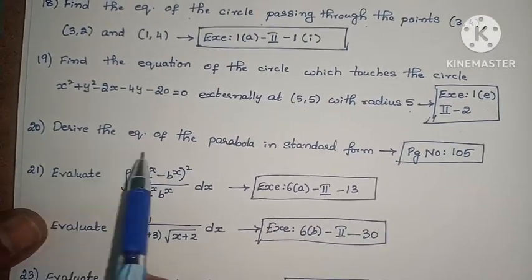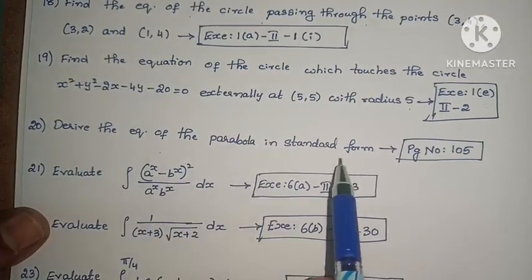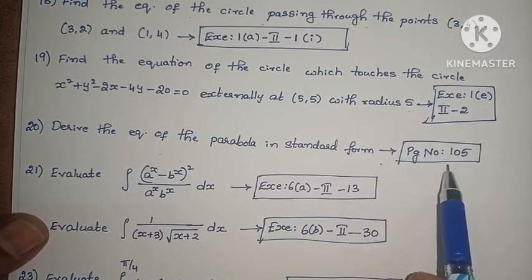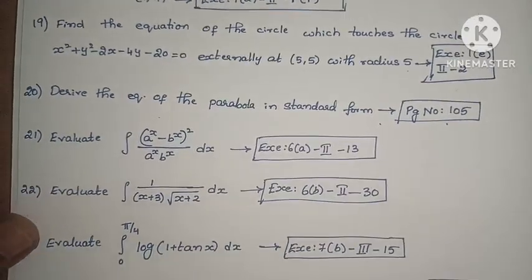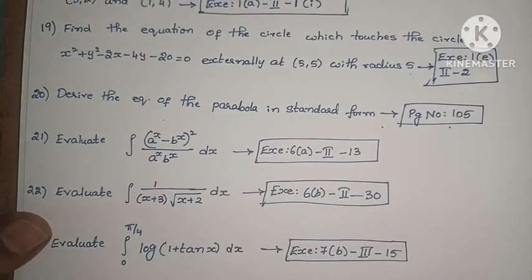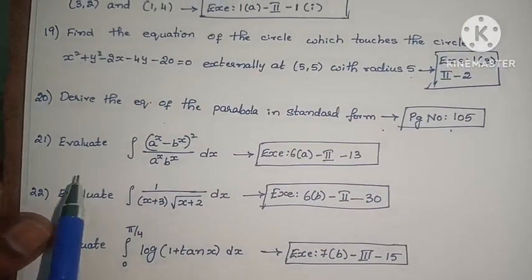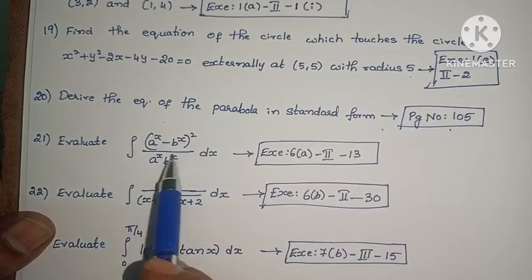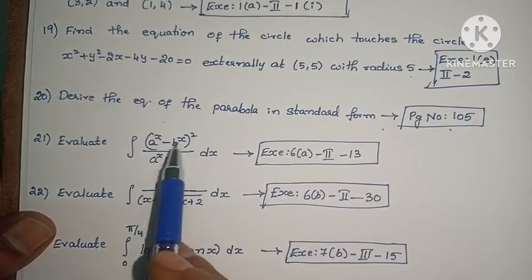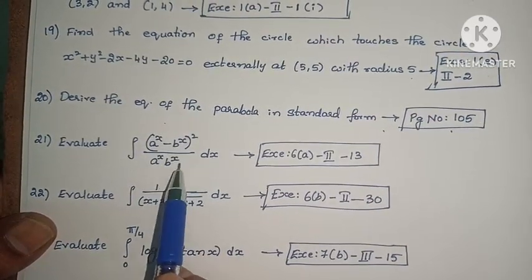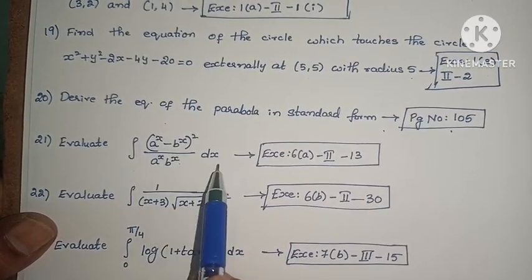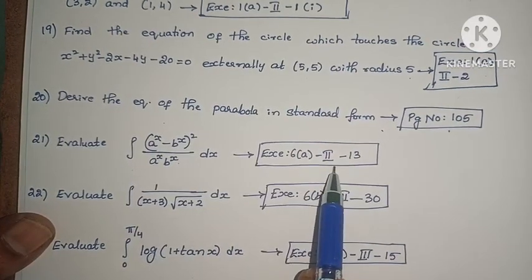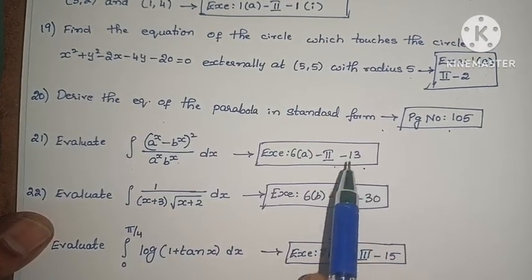Next: derive the equation of the parabola in the standard form. This is on page number 105 — the parabola derivation. Next: evaluate ∫ (aˣ - bˣ)² / (aˣ · bˣ) dx. This is question 6, second exercise, third problem.